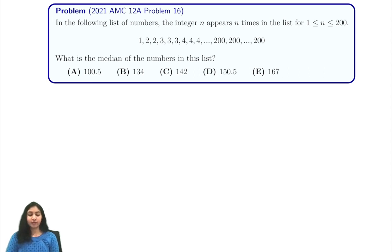We start off by finding how many numbers exist in the list. We have 1 one plus 2 twos plus 3 threes all the way up to 200 two-hundreds. And by our formula, this is just 200 times 201 over 2, which is 201 times 100.